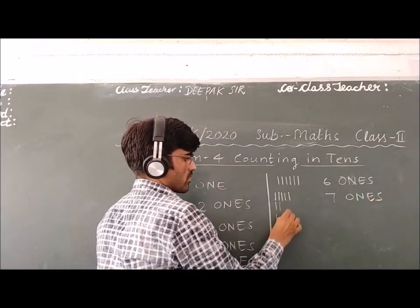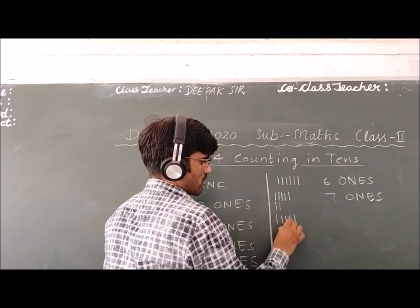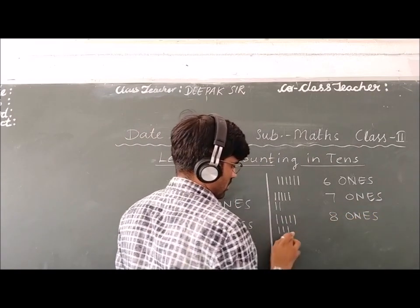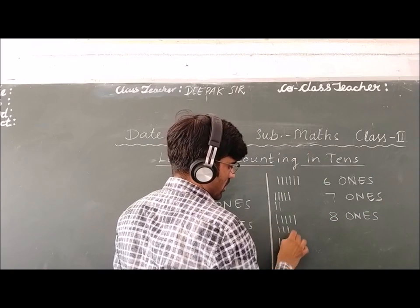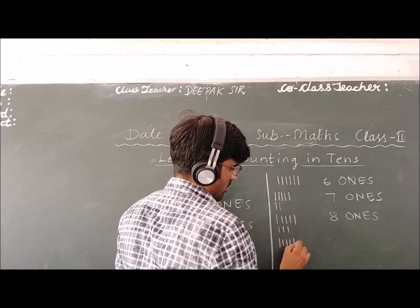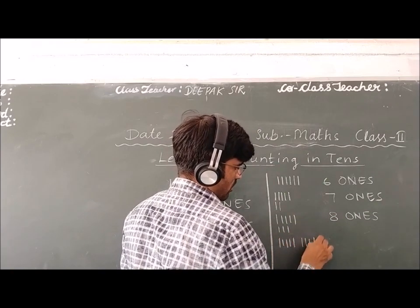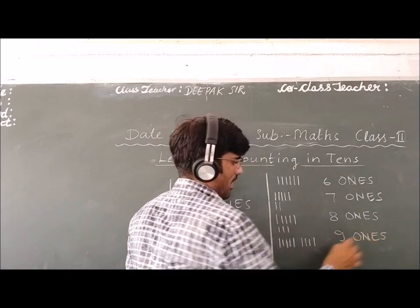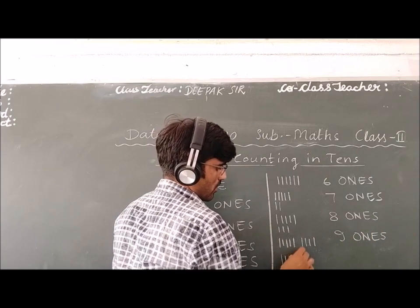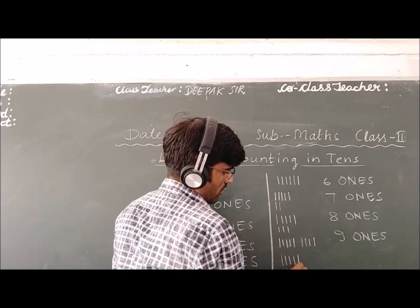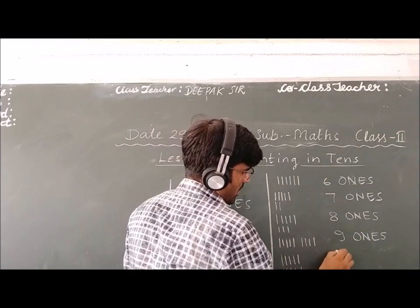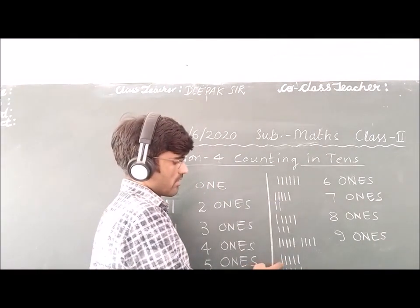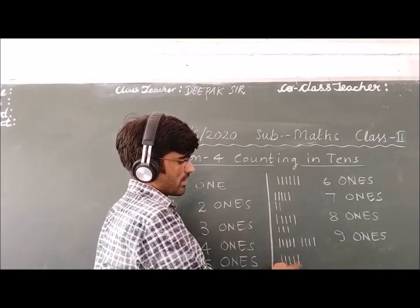One, two, three, four, five, six, seven, eight — eight ones. One, two, three, four — nine ones. And here we have total ten lines — one, two, three, four, five, six, seven, eight, nine, ten.